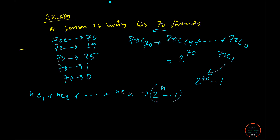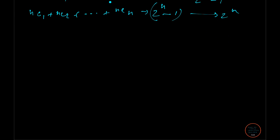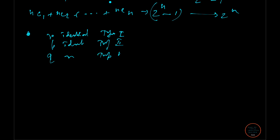If there are identical items mixed in — for instance p identical items of type 1, q identical items of type 2, and r identical items of type 3, plus n other distinct items — then the total number of ways of selecting is (p+1)(q+1)(r+1) × 2ⁿ − 1. The minus 1 is subtracted separately at the end. This formula appeared in a CMI question.